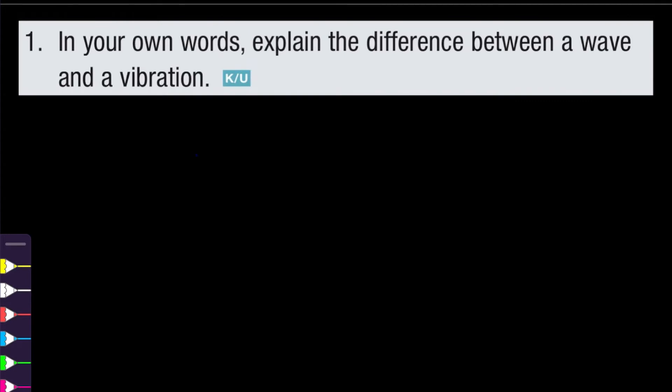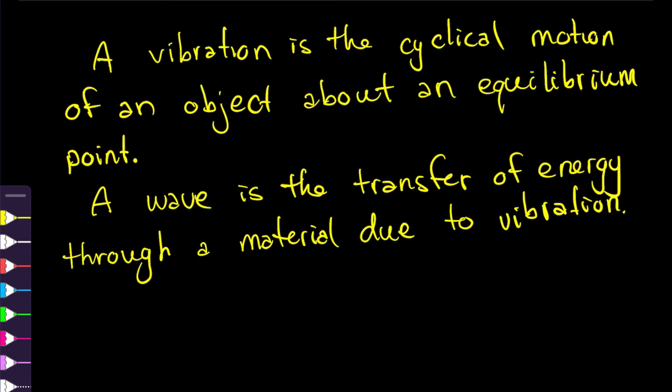Let me give you the definitions to begin with. A vibration is the cyclical motion of an object about an equilibrium point, whereas a wave is a transfer of energy through a material due to vibration.